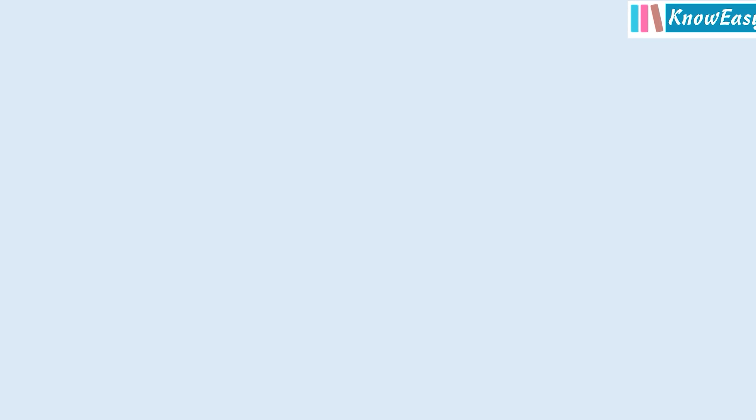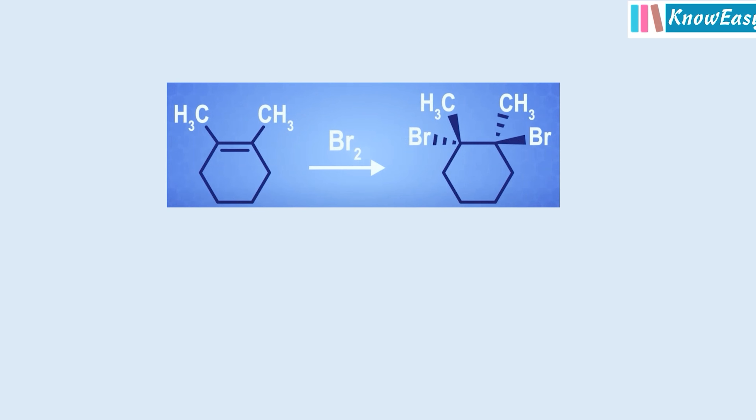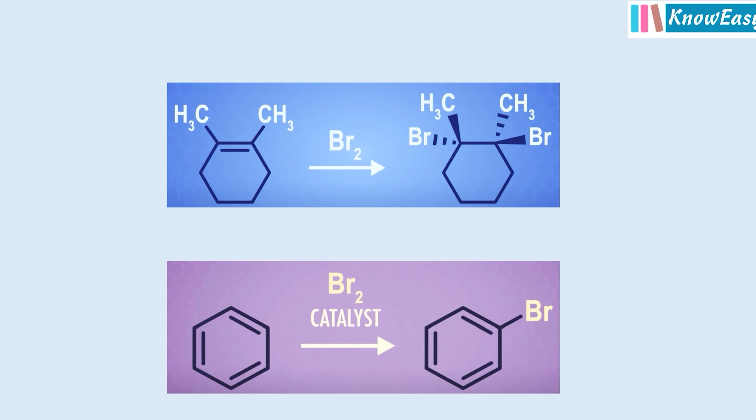An observation about benzene was that normally any alkene easily undergoes addition reaction — for example, a cyclic alkene undergoes addition reaction in the presence of bromine. But when this same bromine reaction is done with benzene, instead of going through addition, benzene undergoes substitution reaction. The question arose: why is this happening? In 1929, a paper published by famous scientist Kathleen Lonsdale showed, using X-ray crystallography, that benzene has a flat ring structure and all bonds of benzene are of the same length.